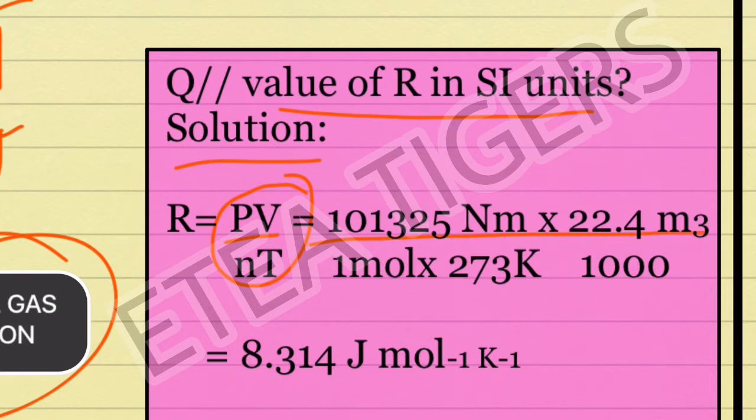What is R? We know PV by nT. We have a number of 101325 newton meter.